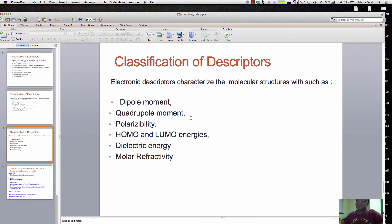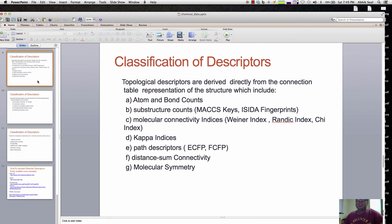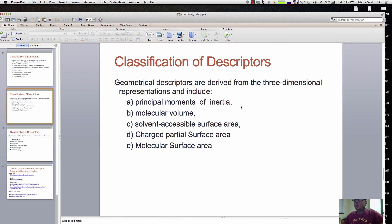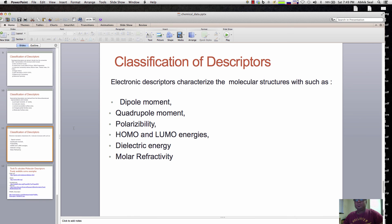Mostly people use 2D descriptors, the topological ones. Sometimes when they do three-dimensional searching, they use these kinds of descriptors if they want to find compounds based on 3D similarity. These are the descriptors, and if you want to model, you can calculate them and figure out which descriptors give you a very good model.